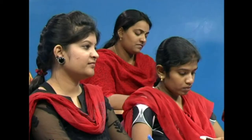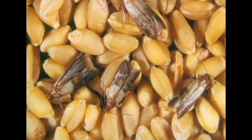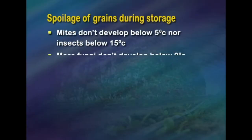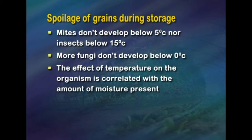Coming to temperature: the rate of all chemical reactions including respiration increases with temperature. Consequently, respiration and deterioration in grain also increases with temperature. When the temperature and moisture level of the grain are correct, there will be only the amount of respiration needed to keep the embryo alive. Grains stored at high temperatures therefore respire and spoil quicker than well-dried grain kept in a cool dry place. Higher temperatures also favor multiplication of insect pests, fungi and rodents. Some important points: mites don't develop below 5°C, nor do insects below 15°C; most storage fungi don't develop below 0°C.